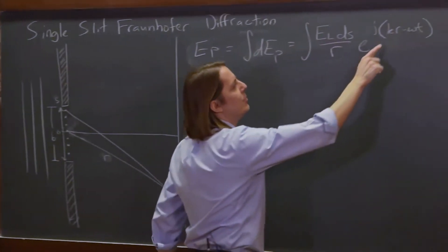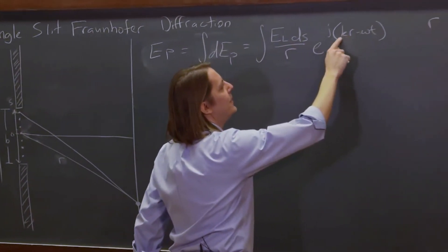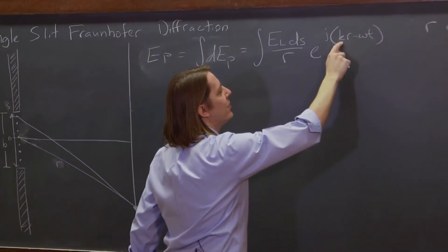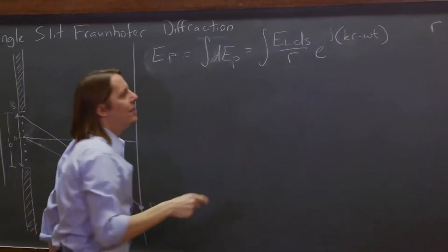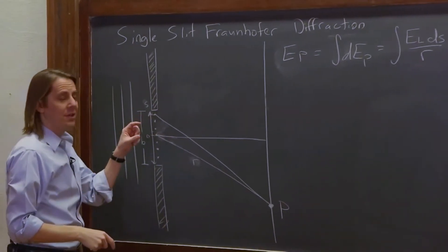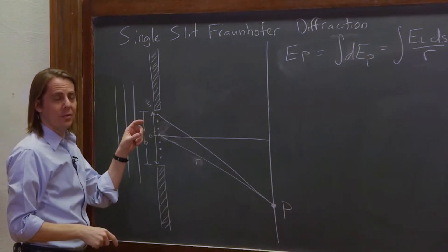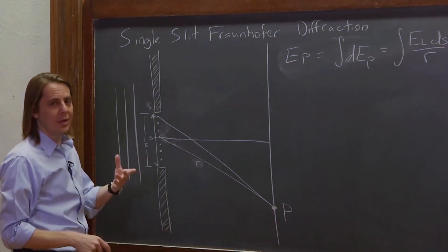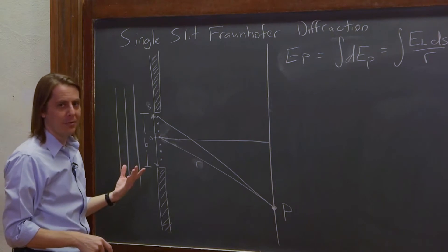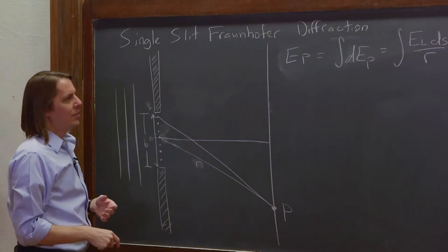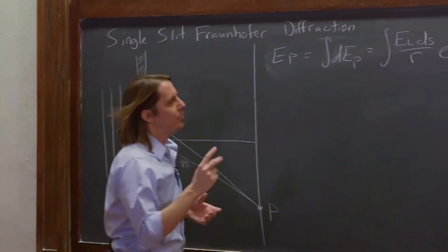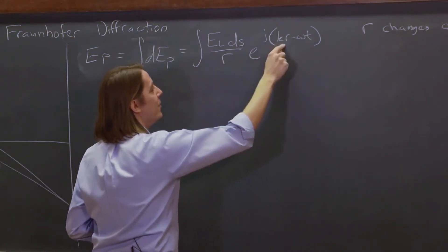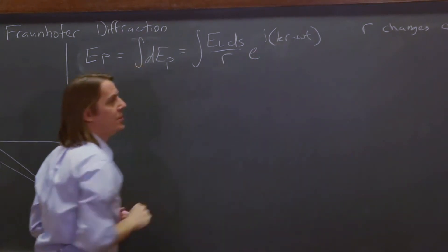However, in the phase term it's going to matter. This is the phase of a sinusoid, and we're multiplying R by 2π over the wavelength. So even if the change is small, if it's large compared to the wavelength, it makes a big difference. The wavelength is only half a micron when you're doing this with visible light. So small changes in R can matter a lot in the phase term but don't matter much in the amplitude.